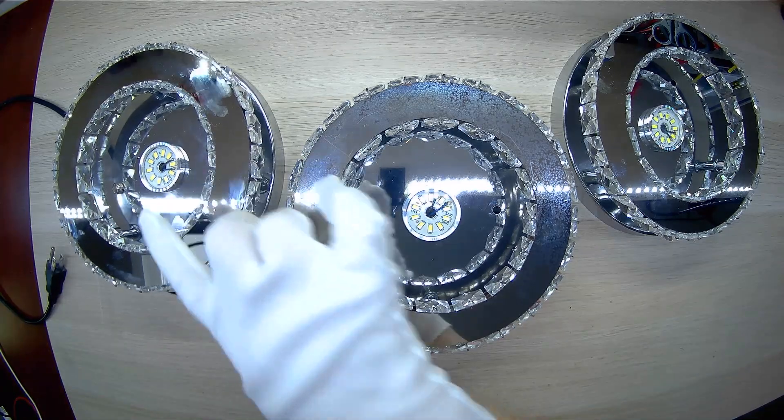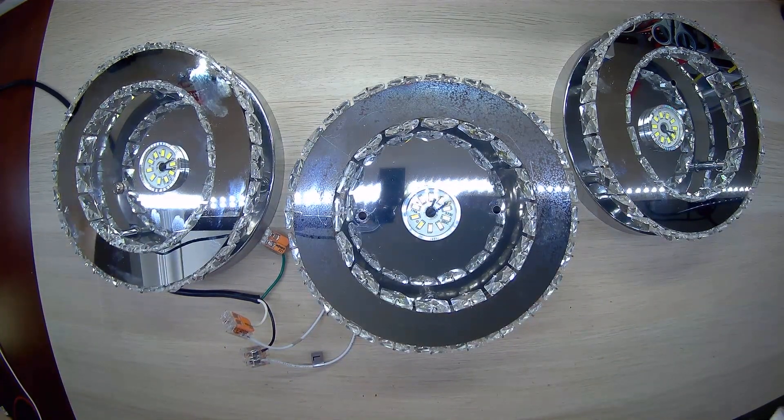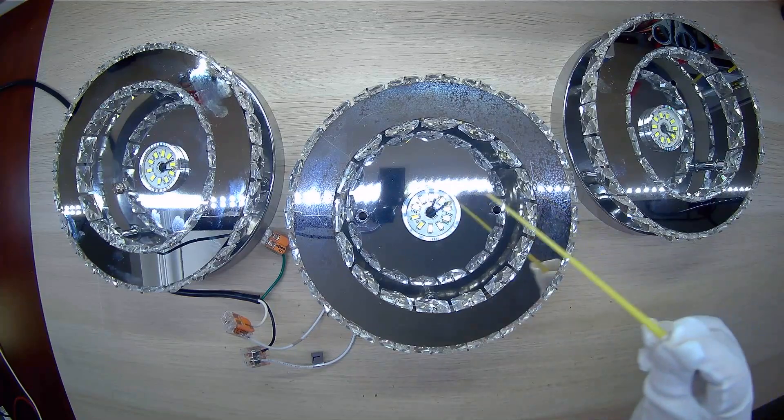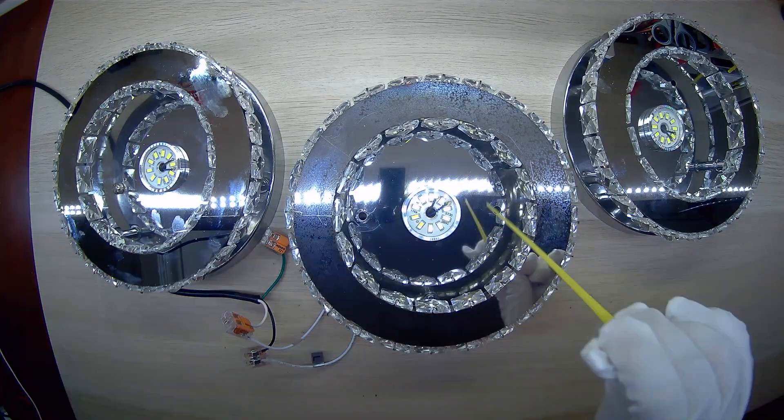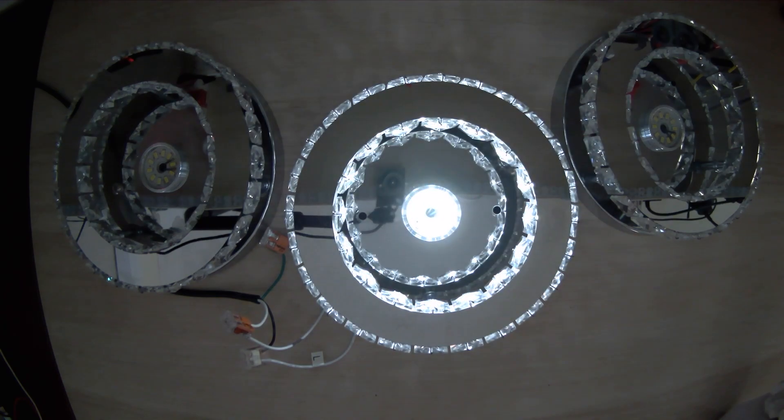Today we're repairing three identical light fixtures and they all have the same fault. You can see that LEDs in the small section are flickering and the large section of the light fixture doesn't light up. We can assume that the driver is somewhat faulty, therefore one section flashes and perhaps the large section has faulty LEDs.